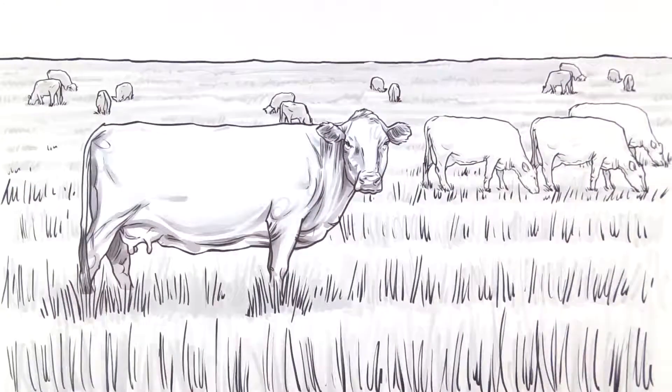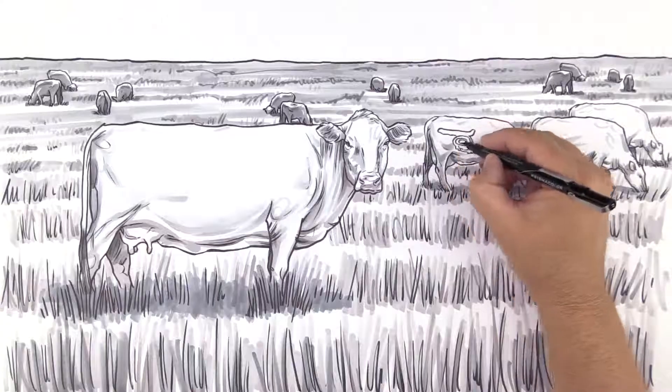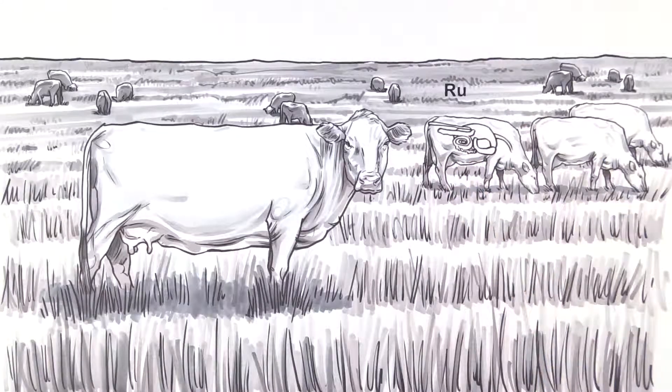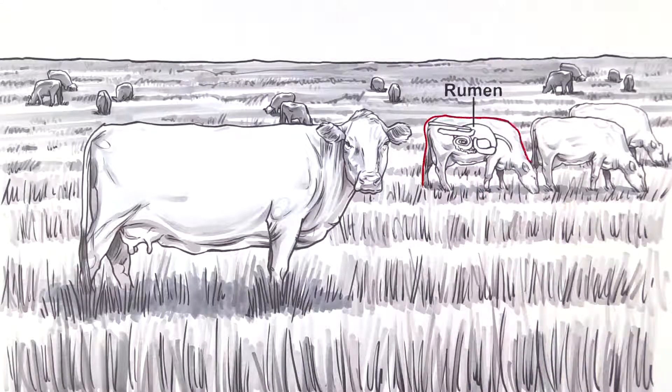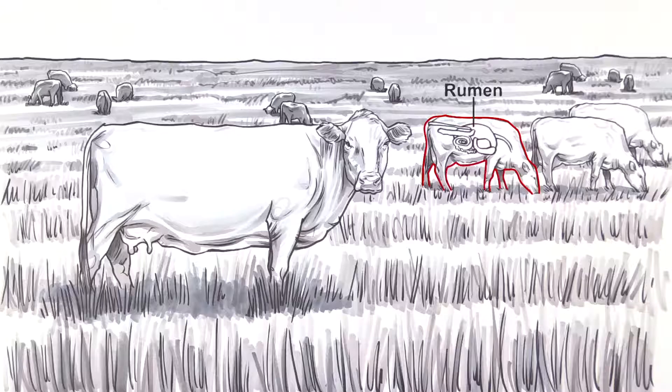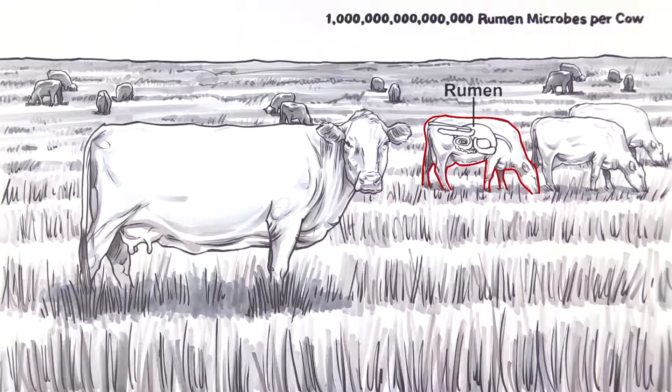It's all about the bugs. It all starts with the microbes, or bugs, inside of the cow's rumen. These microbes include protozoa, bacteria, and fungi. They add up to more than a quadrillion rumen microbes per cow. Now, that's a lot of bugs.